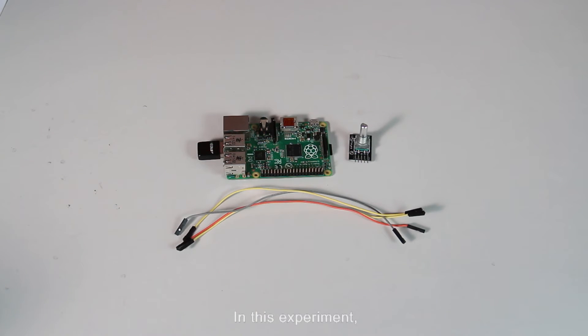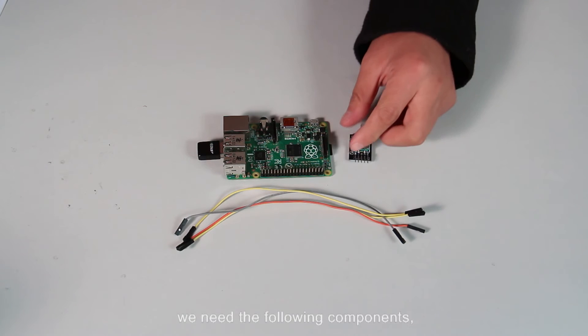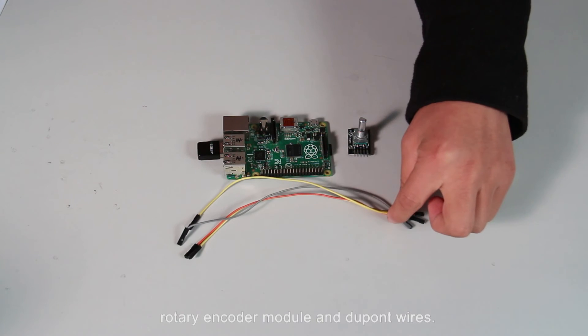In this experiment, we need the following components. Rotary encoder module and do bond wires.